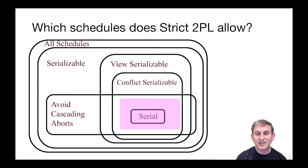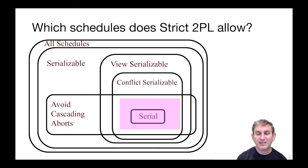Strict 2PL is some subset of the overlap between the avoids-cascading-aborts schedules and the conflict serializable schedules. And within this pink strict 2PL region there are also the serial schedules, which are of course conflict serializable and avoid cascading aborts. Hopefully this Venn diagram makes sense — you can convince yourself about its different pairwise containments or non-containments to test your understanding of these different definitions.